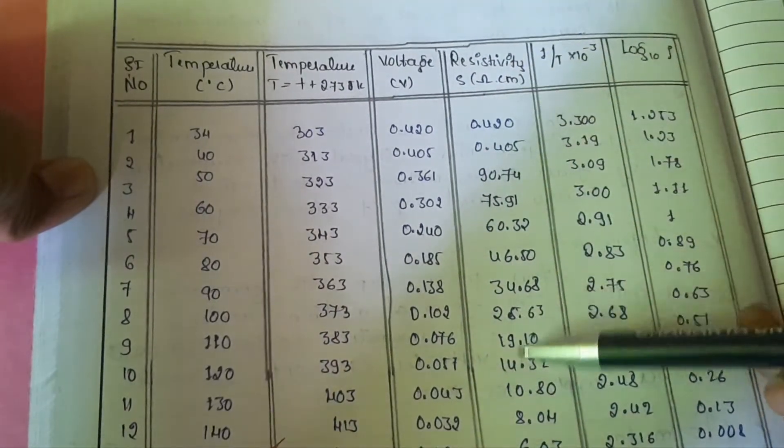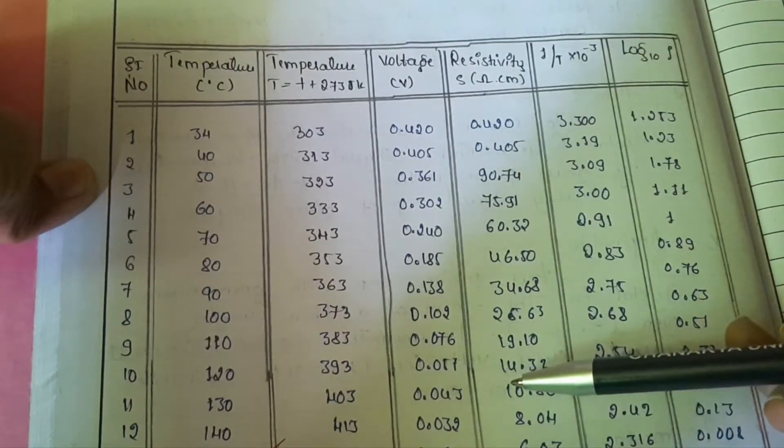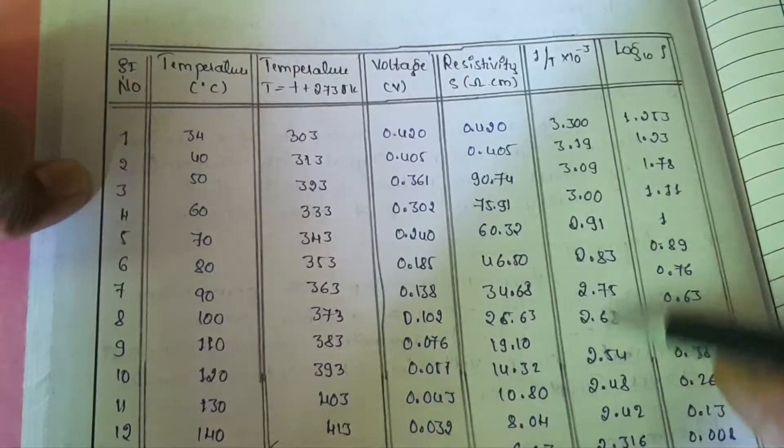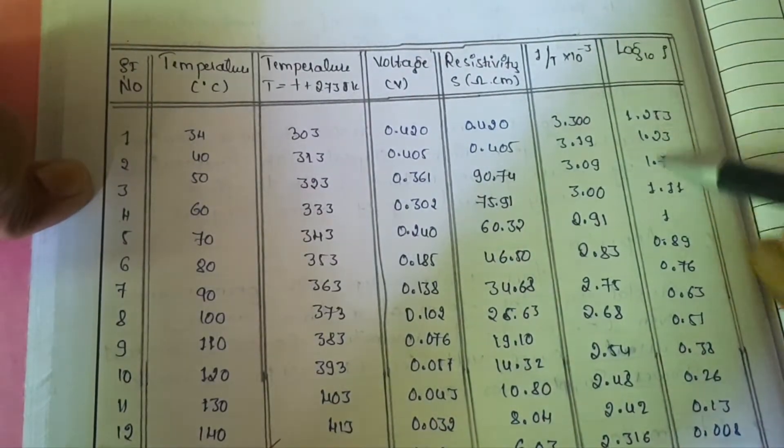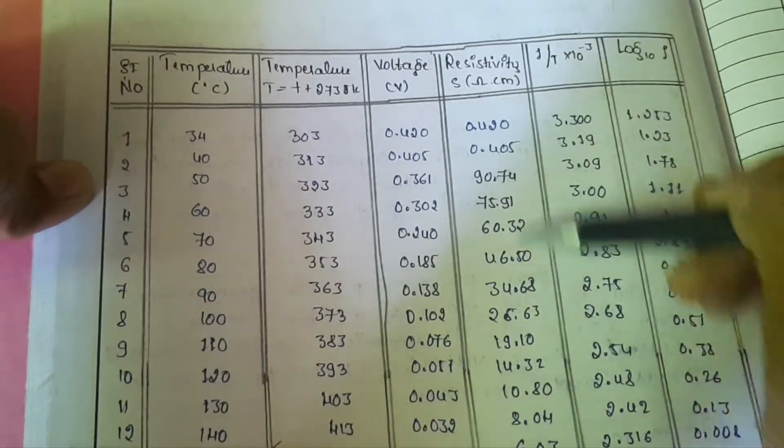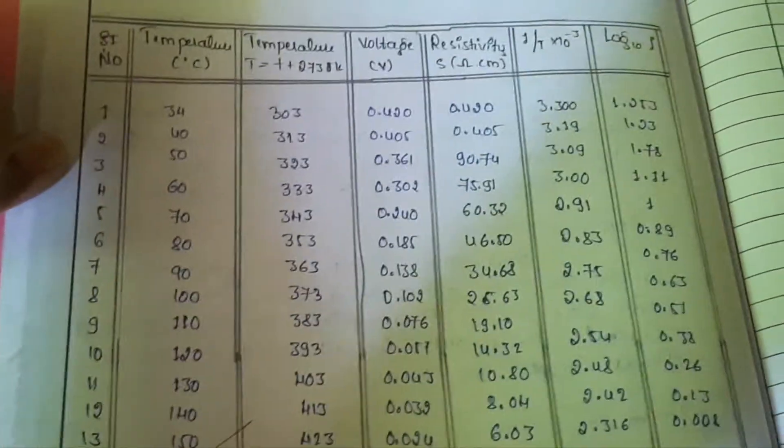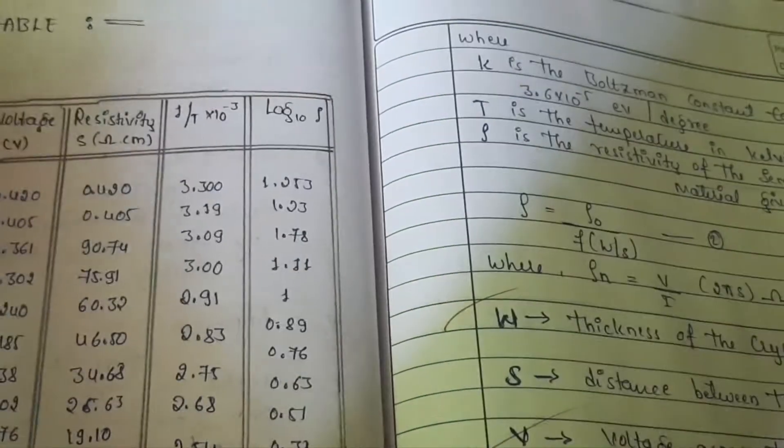Voltage you have to note on, corresponding voltage. Then calculate the resistivity. There is a formula to calculate the resistivity. And take the temperature 1 over T and take the log rho. This column log of rho you have to take. The formula to calculate resistivity is given here.